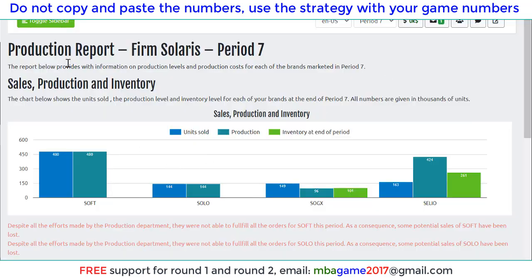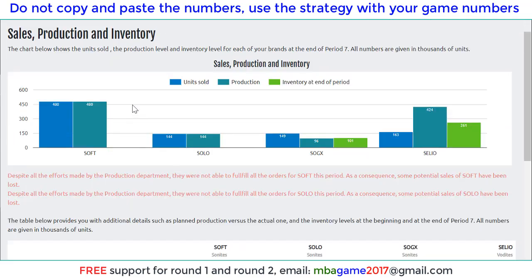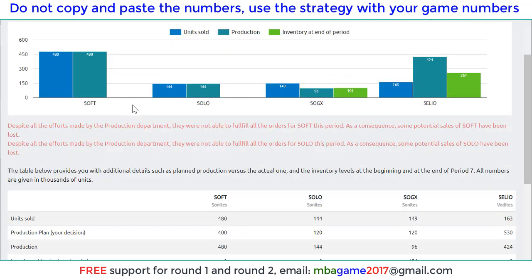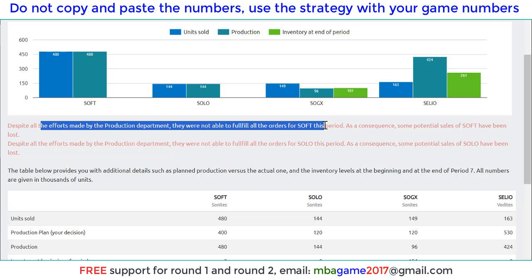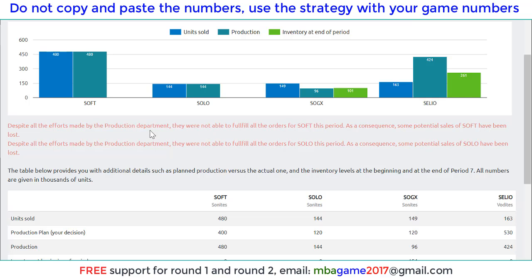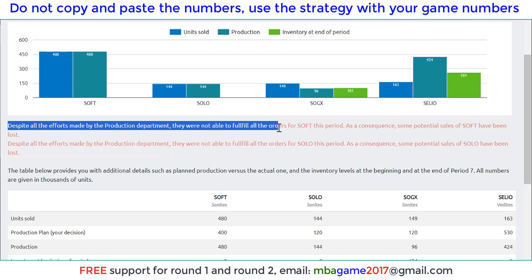So you see on the screen is a sample of production report. The company is doing very well, so you need to check that. We have some brands here — we start with Soft and Solo, the two products, and then we developed a new product for the Gen X segment and also for the Vodai. You see that the system says we cannot produce enough products despite all the efforts by the production department.